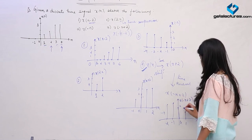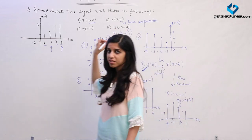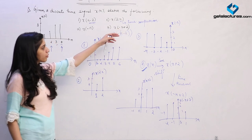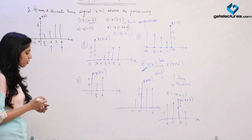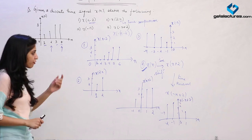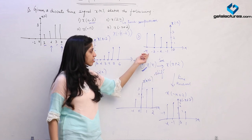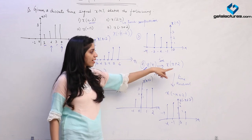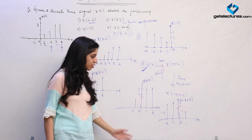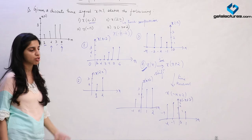The only thing to keep in mind when performing combined operations — such as a shift plus reversal — is the order. If you wish to do reversal first, you cannot simply do a left shift afterwards; you would have to perform a right shift instead. This is the key thing to remember when performing any combination of signal operations.